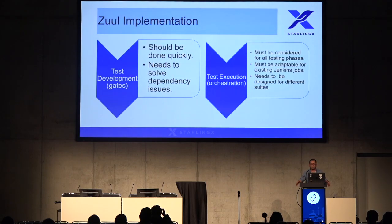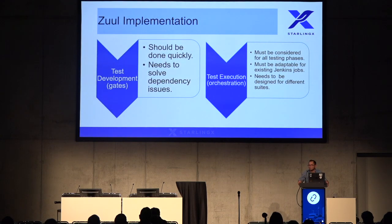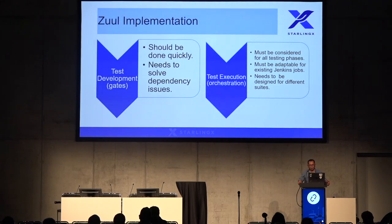Getting back to the Zuul implementation, we are trying to implement Zuul in two different ways — first as a gatekeeper, and the second one as a job orchestrator. As I'm showing on the slide, as a gatekeeper, Zuul needs to solve all those dependency issues according to the test cases that are going to be developed. And as a job orchestrator, it must be considered for all the testing phases and needs to be designed for different task suites.